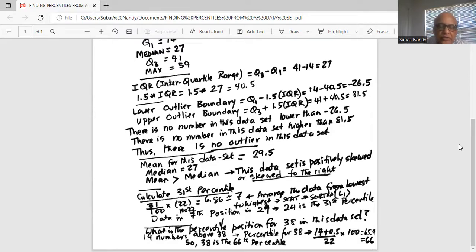The next question asks, what is the percentile position for 38 in this data set? So again, we look at the sorted data set, find out 38, and there are 14 numbers above 38.